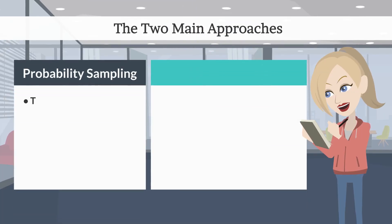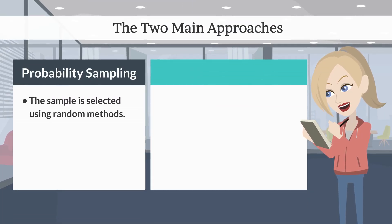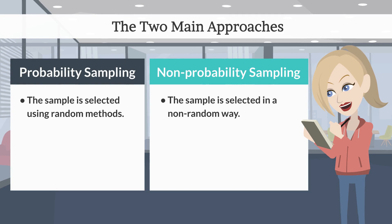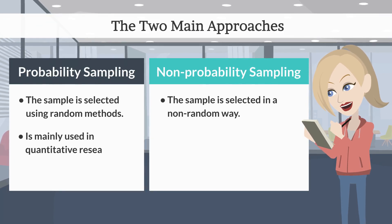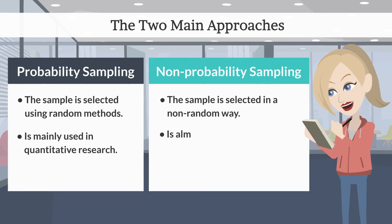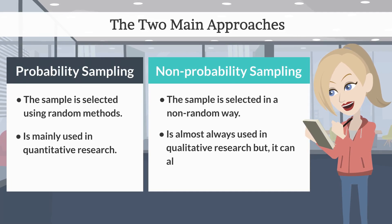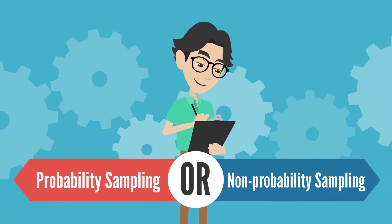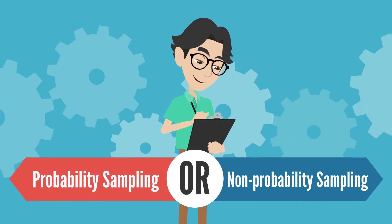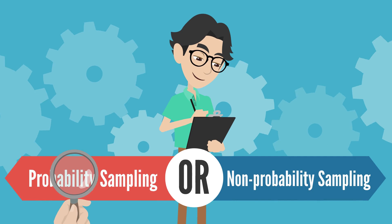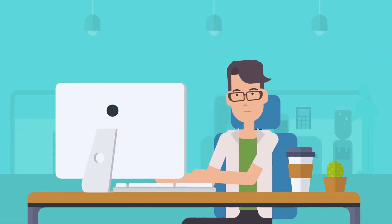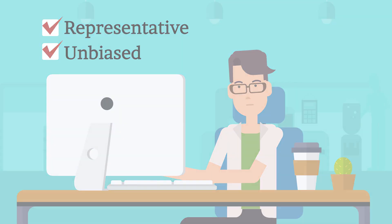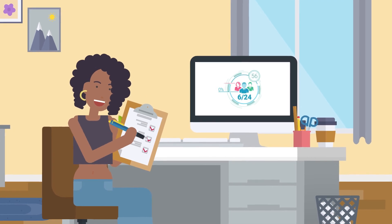In probability sampling, the sample is selected using random methods. In non-probability sampling, the sample is selected in a non-random way. Probability sampling is mainly used in quantitative research, while non-probability sampling is almost always used in qualitative research but can also be used in quantitative research. The sampling method you use affects how confidently you can generalize your results to the population as a whole.